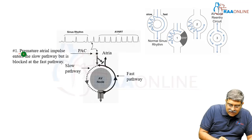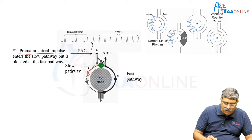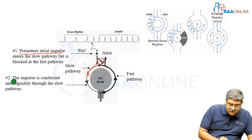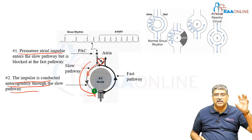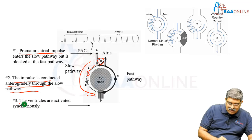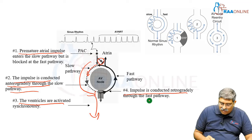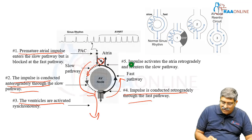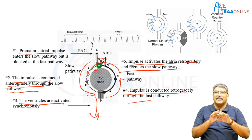The premature atrial impulse enters the slow pathway and then it is blocked at the fast pathway. Second, the impulse is antegradely conducted towards the slow pathway, which is up to which it is a normal sinus rhythm. The ventricles are activated synchronously. The impulse is now conducted retrogradely to the fast pathway.